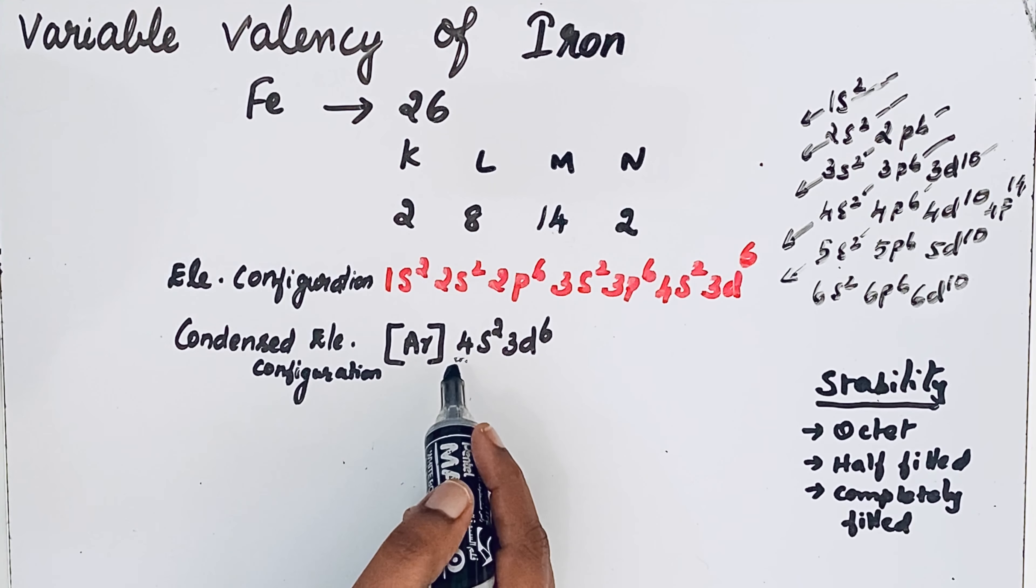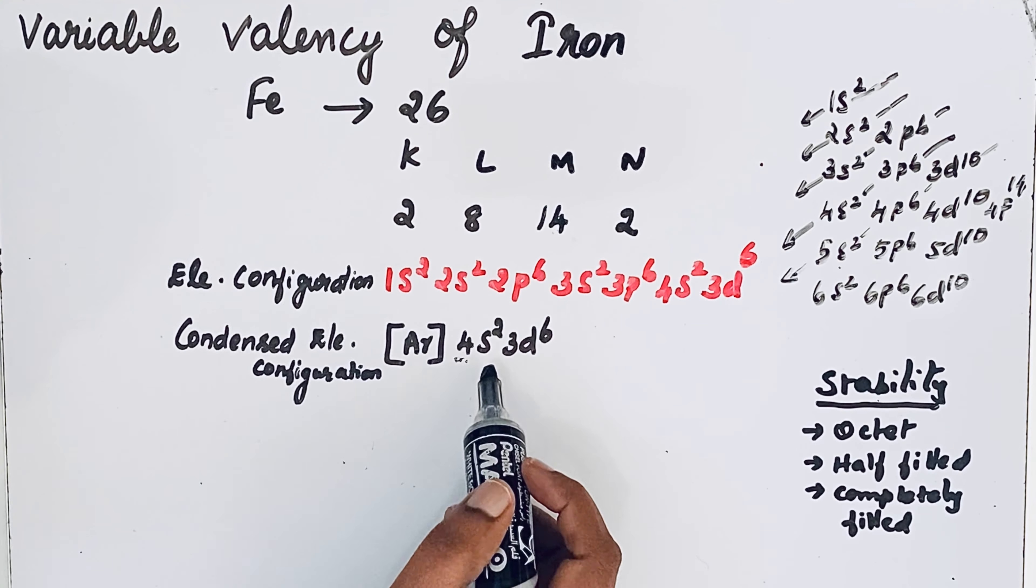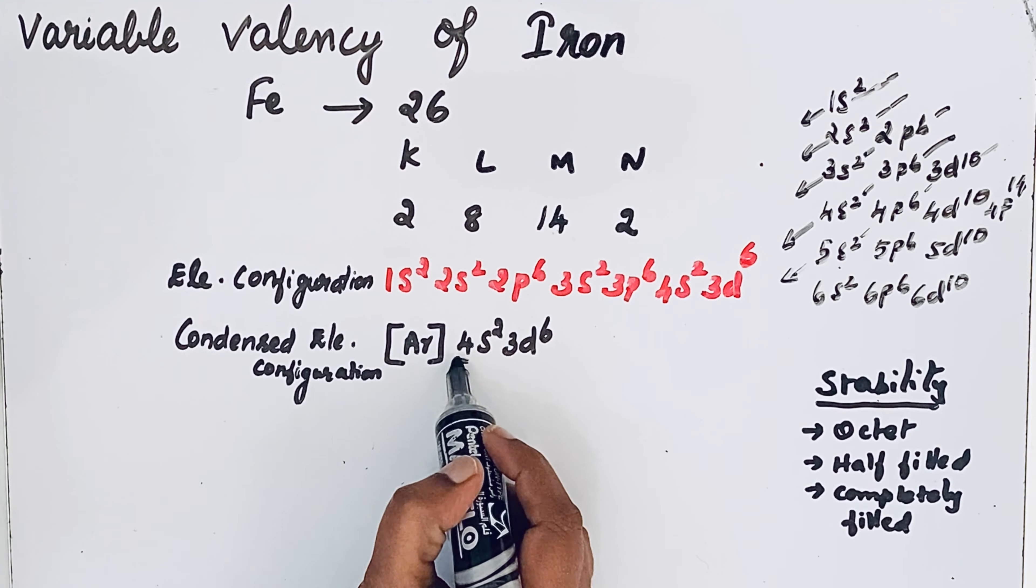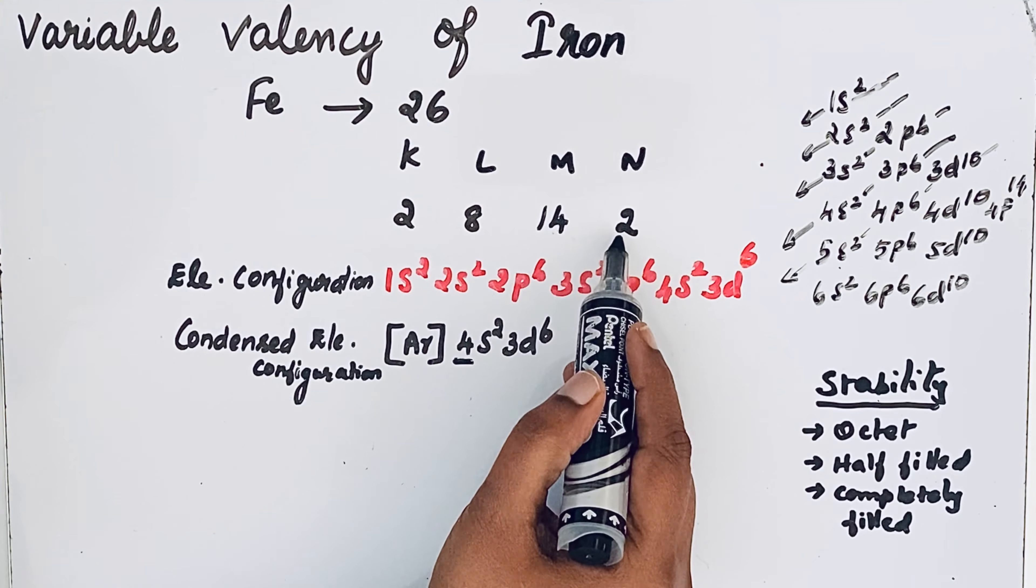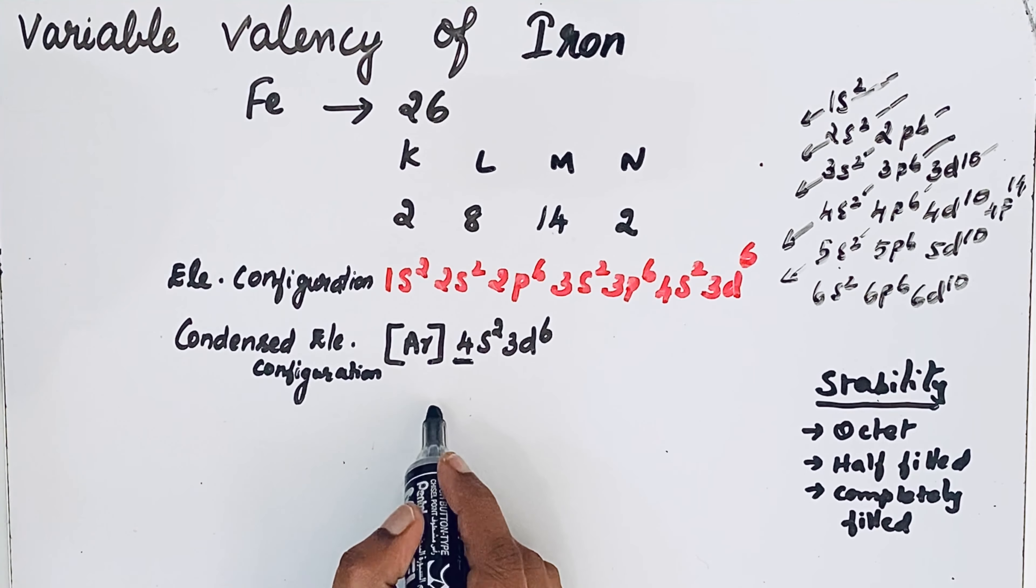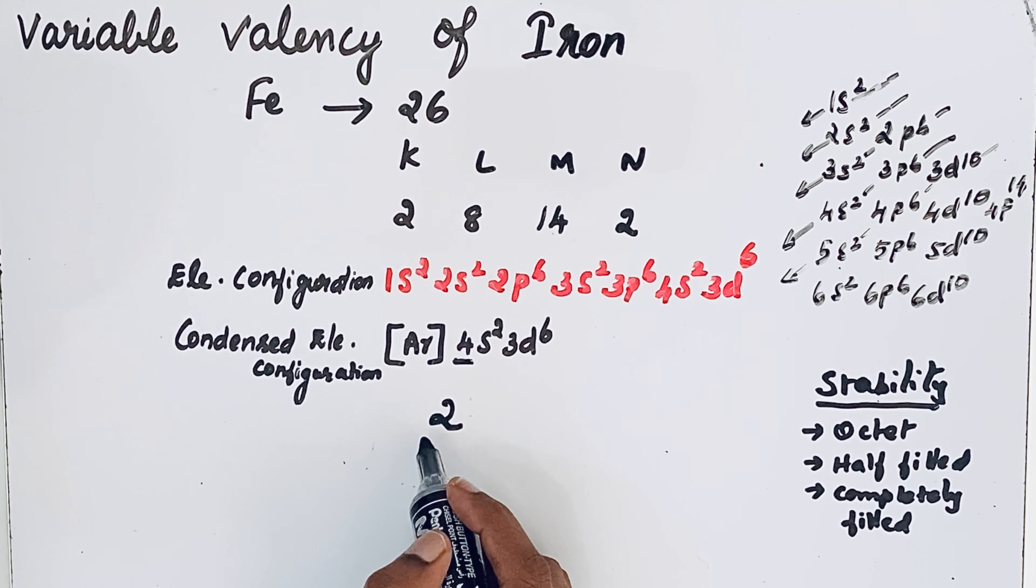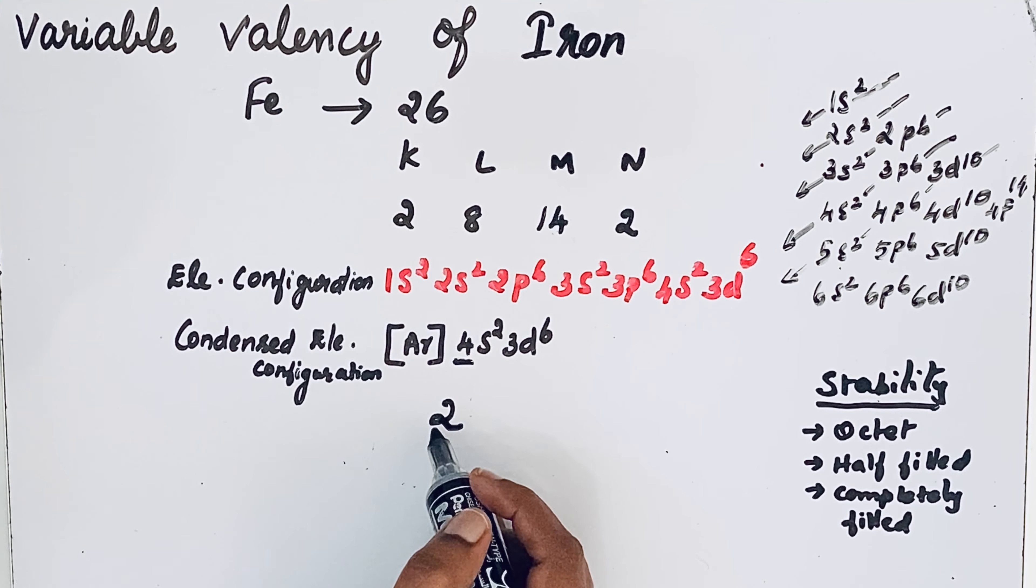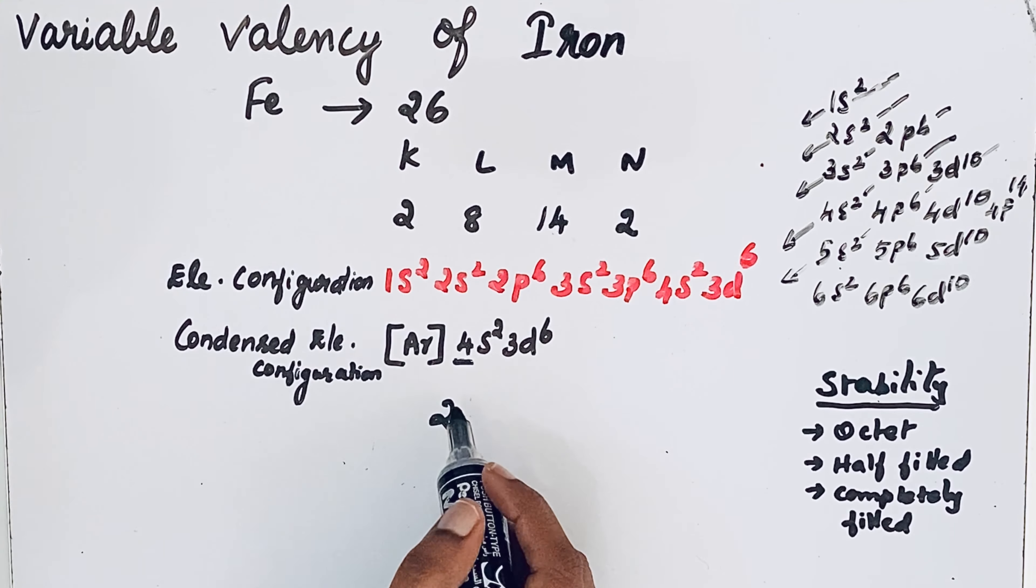During chemical combinations, iron readily loses electrons present in the outer shell. We know there are two electrons in the outer shell, so iron forms valency two. Because valency is the combining capacity, by losing these two electrons it will form Fe2+ ions.